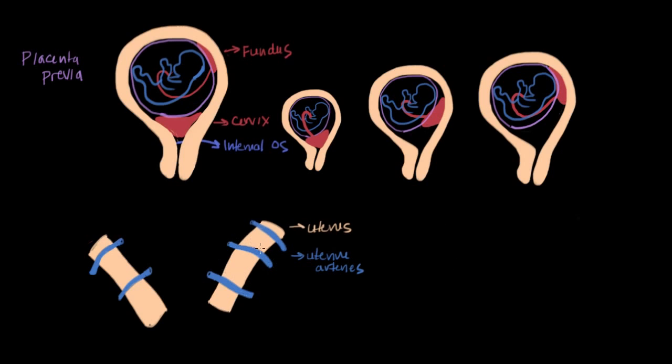So what happens in pregnancy is that these uterine arteries become really juicy and plump. And they actually cross through the wall of the uterus and they squirt out all this blood, kind of like we said the jets in a hot tub do.